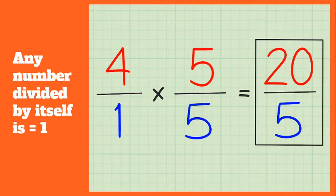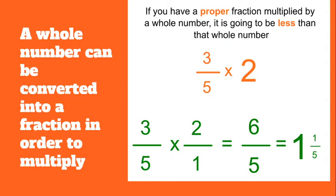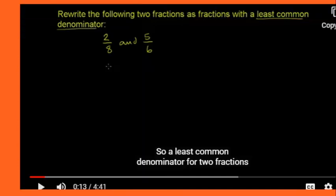In this example, we have a fraction multiplied by a whole number. Just like I explained, the whole number two can be changed to a fraction — two over one — which we can then just multiply. Three times two is six, and five times one is five, which would give us six fifths — a mixed number or mixed fraction — which we'll be learning about a little bit later on.